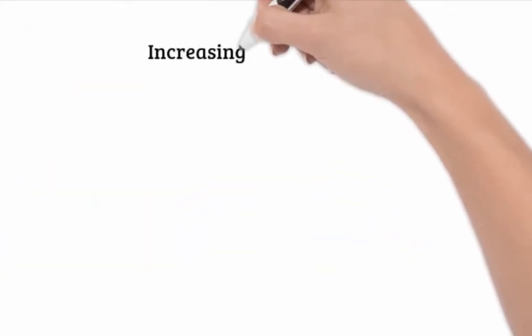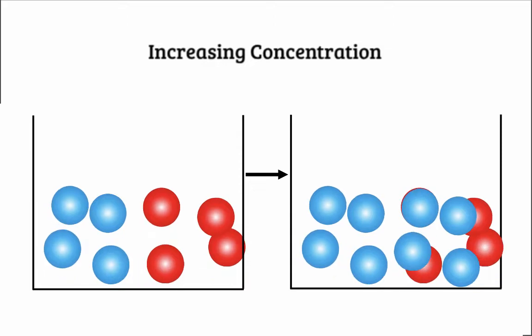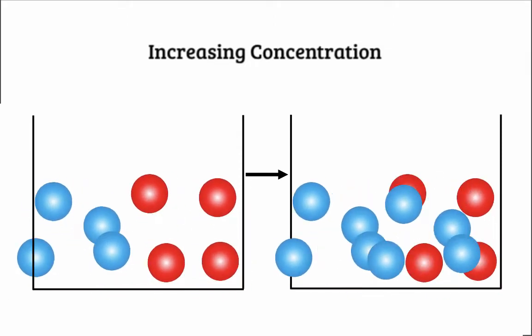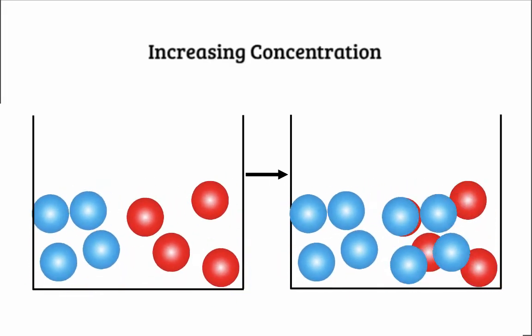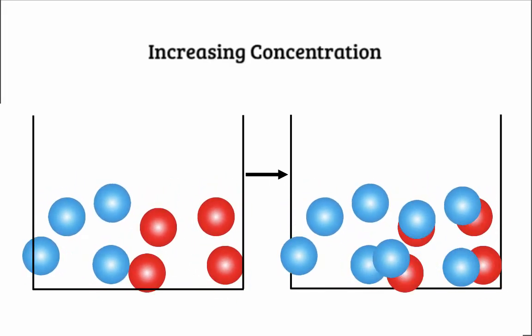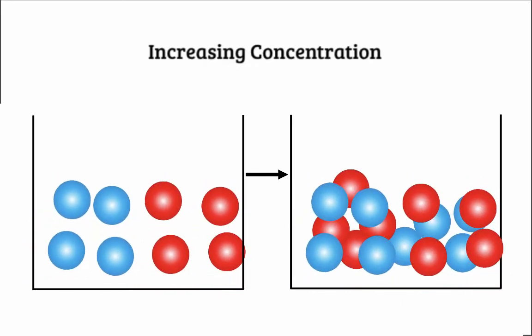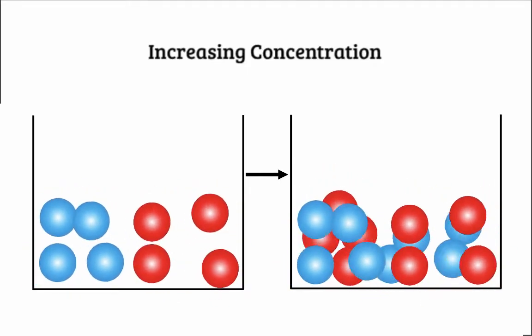The second is increasing the concentration of one or both of the reactants. When we increase the concentration, there are more reactant particles. If there are more particles in the solution, there's a higher likelihood that collisions will occur. By increasing the concentration of one reactant, the rate of reaction will increase, and by increasing both, the rate will increase even further.